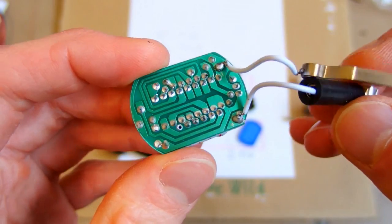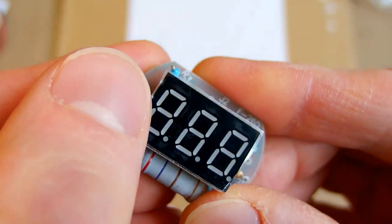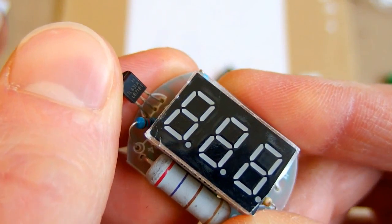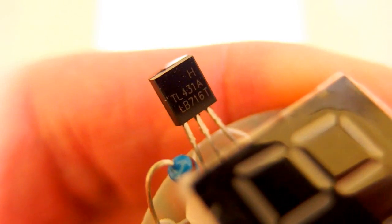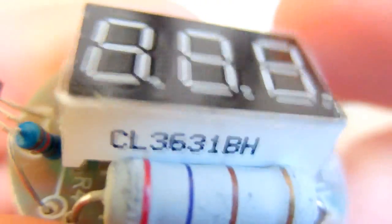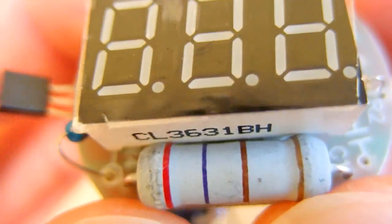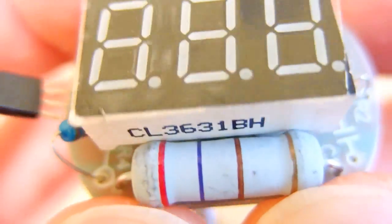No SMD components. This is not a transistor, it's a TL431A. It's an adjustable voltage reference. And this resistor is probably what dissipates all the power, but why?